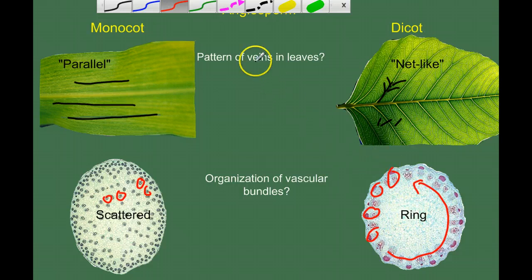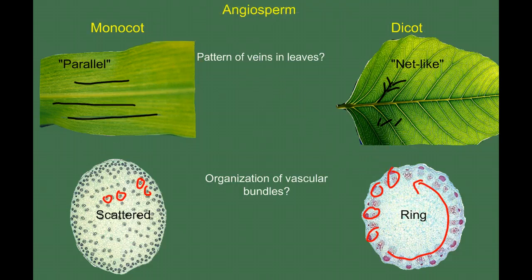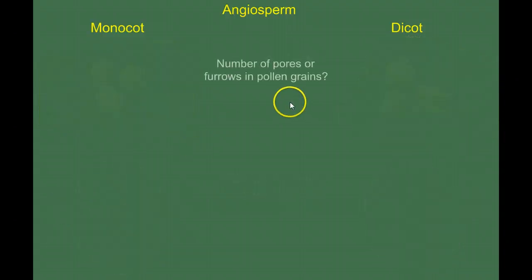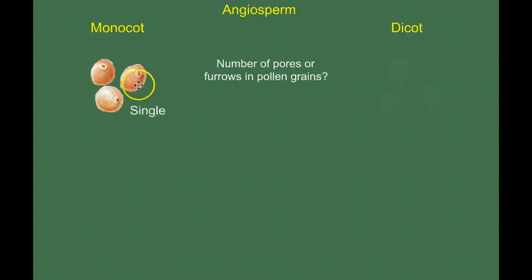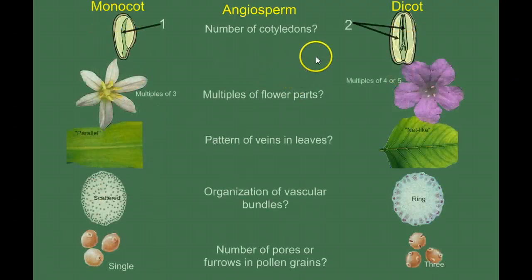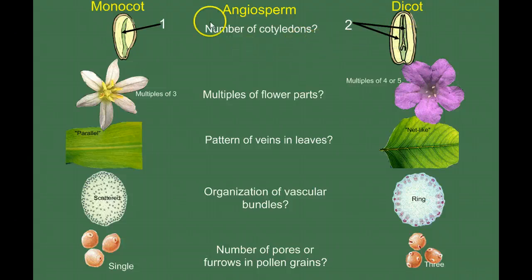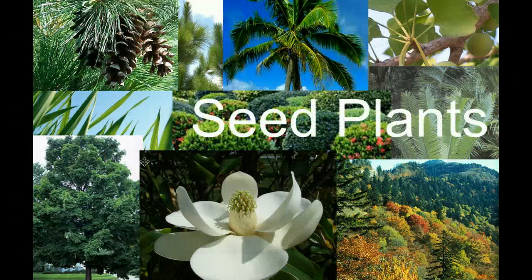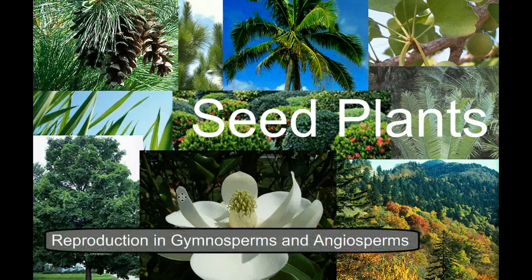There's also a difference in the pollen grains — specifically the number of pores or furrows. In the monocot, pollen has a single pore or furrow. In the dicot, pollen grains have three pores or three furrows. So that's our comparison between monocots and dicots, all within the angiosperm. We don't use the terms monocot or dicot outside of the angiosperm grouping. That ends our introduction to seed plants. Check back for the next video on the reproductive cycles of gymnosperms and angiosperms. Leave any questions in the comments below — I hope you learned something.